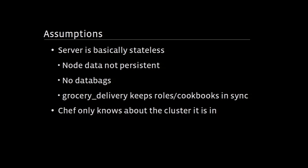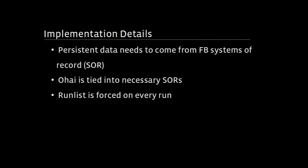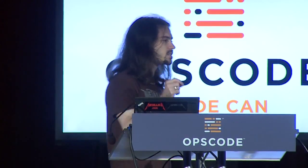There are a couple of assumptions we have to keep in mind when writing cookbooks. We run things stateless, so there's no data persistence — because we whitelist all node attributes, there's nothing you'll ever keep in a node object from run to run. No data bags. Grocery delivery keeps roles and cookbooks in sync, and Chef only knows about the cluster it's in. Since there's no persistence within node data, you need something to be persistent: we have our inventory management system and a system that groups nodes into groups. We pull that data with an Ohai plugin, and it's available for the duration of your Chef run.